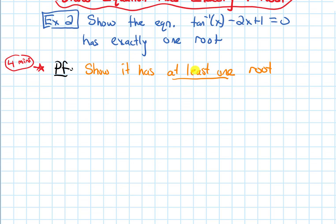For showing it has at least one root, we've done problems like this before in an earlier section. Pause the video for four minutes and see if you can show this has at least one root. The key idea to showing it has at least one root is to use IVT, the Intermediate Value Theorem.